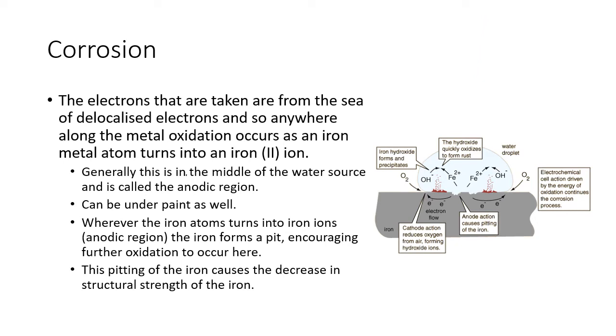The electrons are taken away from the sea of delocalized valence electrons on the iron. So the iron has a sea of delocalized valence electrons. Those electrons are taken at the interface at the cathodic area.